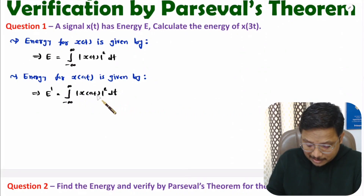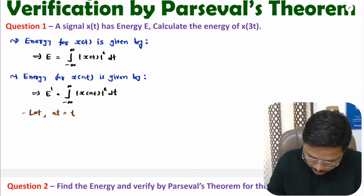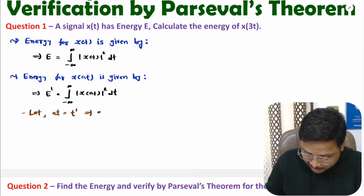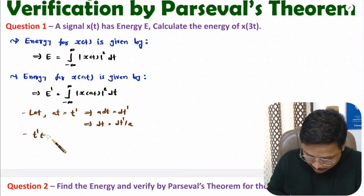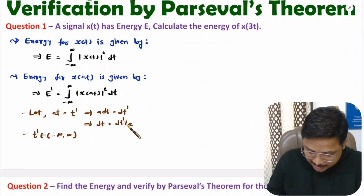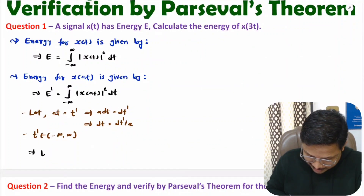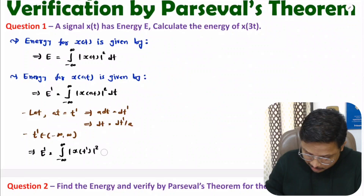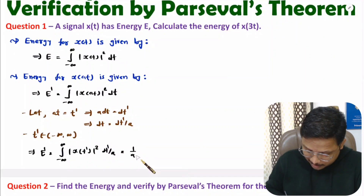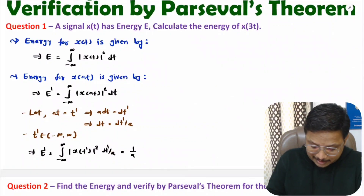For further calculation, let us consider at = t'. In this situation, if you talk about the differential term, then a·dt = dt', which means dt = dt'/a. And the limits of t' will remain from minus infinite to plus infinite. Now placing this data in the integral, energy E' equals the integration from minus infinite to plus infinite — substituting t' instead of at — and placing dt'/a instead of dt. So we observe (1/a) times the integration of x(t') squared dt', which equals energy E.